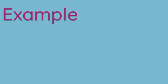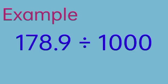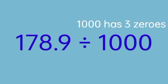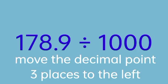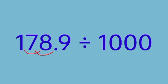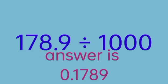Let us proceed to our last example. What if we are going to divide 178 and 9 tenths by 1,000? 1,000 has 3 zeros, so we will just move the decimal point three places to the left — 1, 2, and 3. Our answer will be 0 and 1,789 ten-thousandths. We added 0 before the decimal point to avoid confusion.